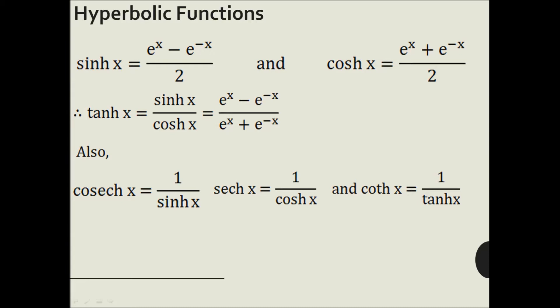Cosh x = (e^x + e^(−x)) / 2. Tanh x is similarly defined as sinh x divided by cosh x. Other functions like cosech x, sech x, and coth x are defined similarly to cosec x, sec x, and cot x.